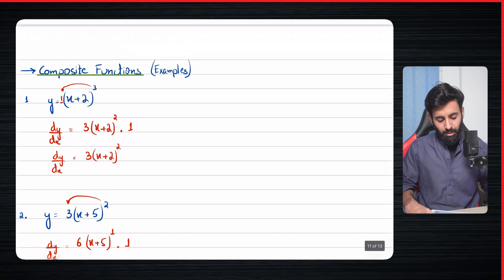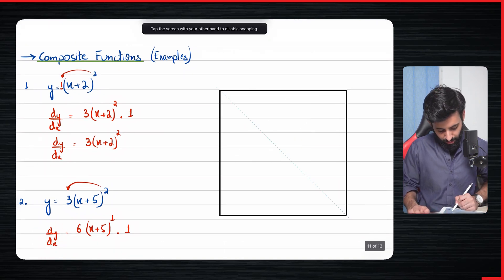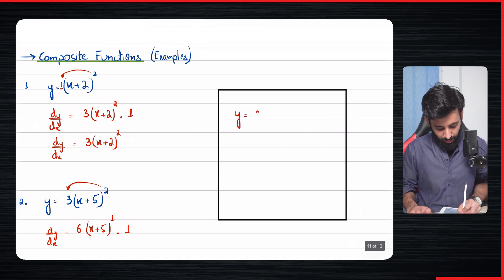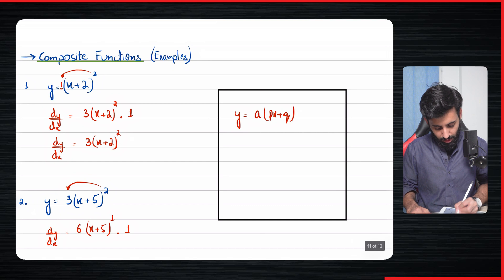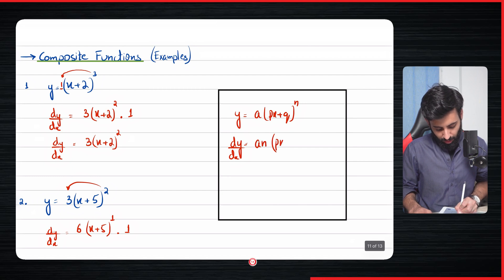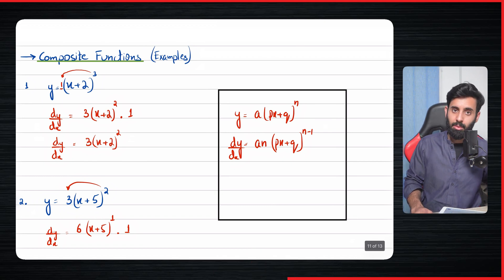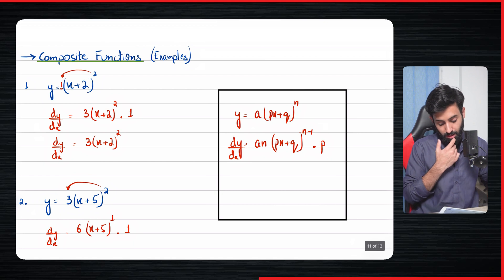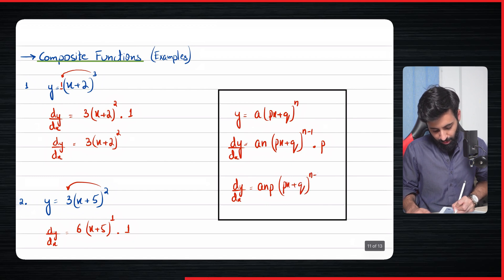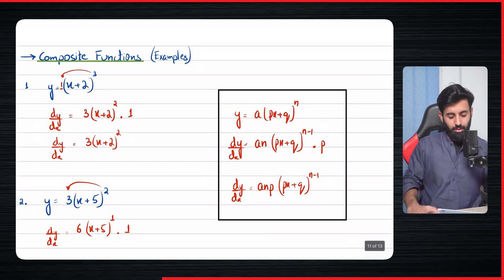Hopefully you've figured out a general rule. If you have y = a(px + q)ⁿ, then when you differentiate: a and n get multiplied, you keep (px + q) as it is but reduce the power by one to get n − 1, and then multiply by the differential of (px + q), which is p. Writing it all together: dy/dx = anp(px + q)^(n−1). That's the general rule for differentiating a composite function.